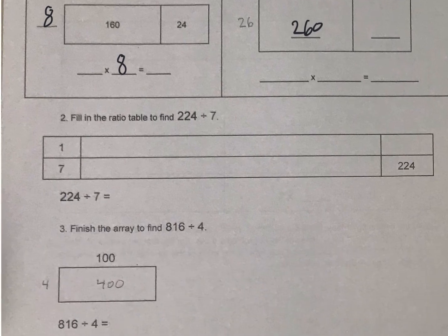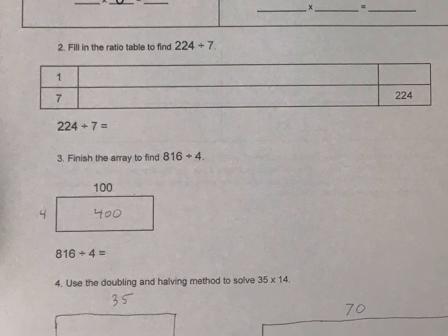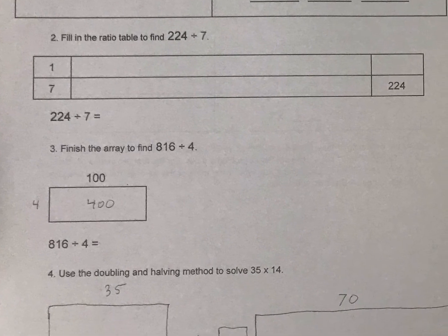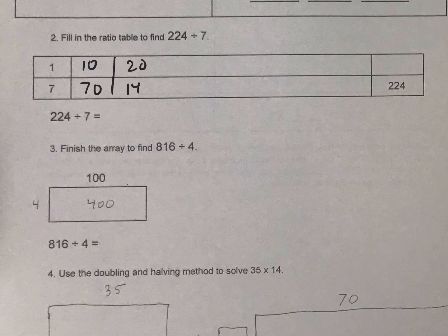Next up we're going to do some ratio tables and arrays or area models to solve this. So let's start by going up to 10 which would give me 70. If I do 20 next I have 140 and I'm just working my way up to 224 to figure out what that is.